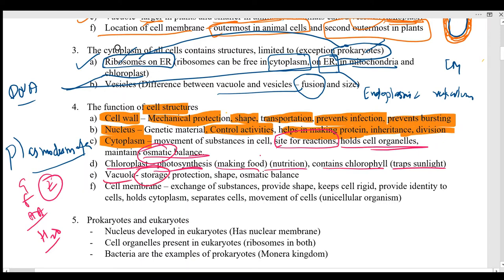Vacuoles are very important because they act as a storage site and a protection site. They put pressure on the cell wall so the cell wall does not break — this maintains the shape and rigidity of the cell. Vacuoles also help in maintaining the osmotic balance and do not allow substances to easily enter the cell.